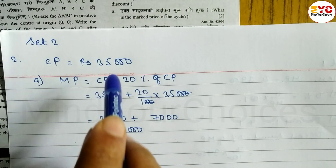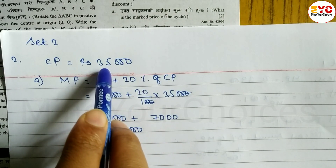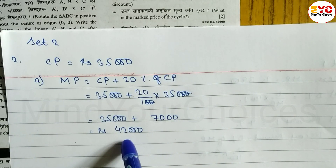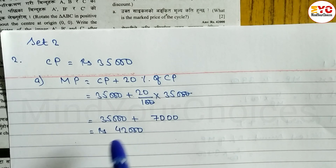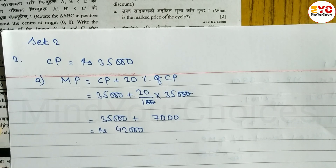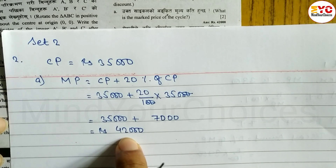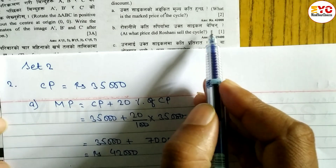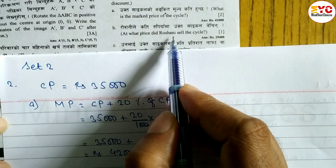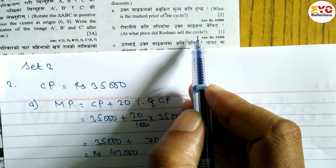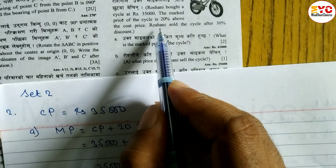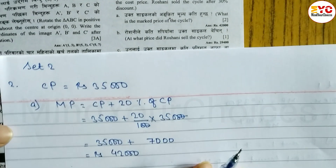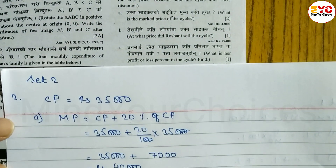Mark price is equal to 42,000. Now we need the selling price — we need to use the discount. The question asks: at what price did Roshni sell the cycle? Roshni sold the cycle after a 30% discount. Discount percent is equal to 30%.